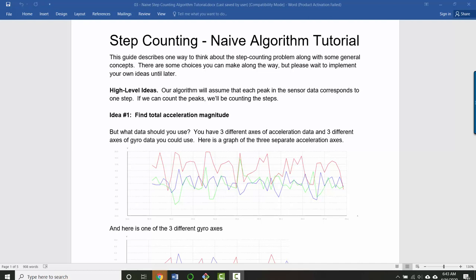There's a couple of improvements we want to make to our original algorithm. Before we were using one axis of accelerometer data and finding peaks in it and counting each of those peaks as representing a single step.